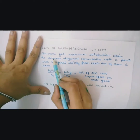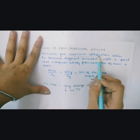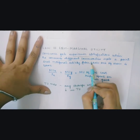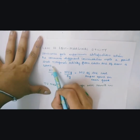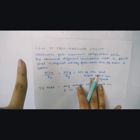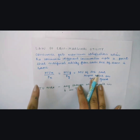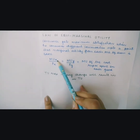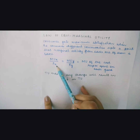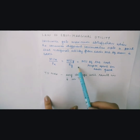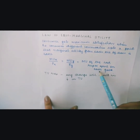The law states that a consumer gets maximum satisfaction when he consumes different commodities up to a point where the marginal utility from consumption of each one of them is the same. Marshall used this law to find out the condition of consumer equilibrium in the case of two commodities: marginal utility of commodity X divided by price of X equals marginal utility of commodity Y divided by price of Y, which equals the marginal utility of the last rupee spent on each good.